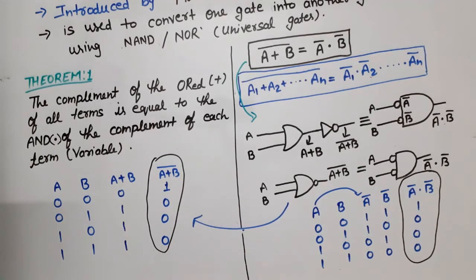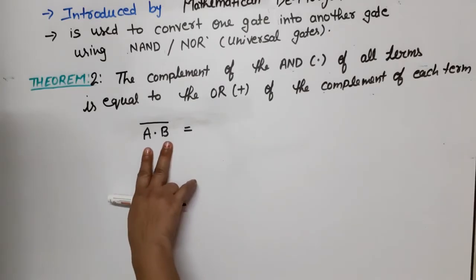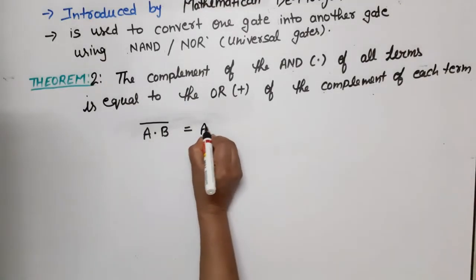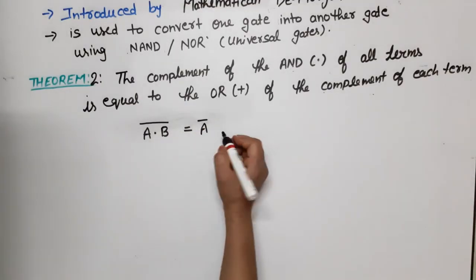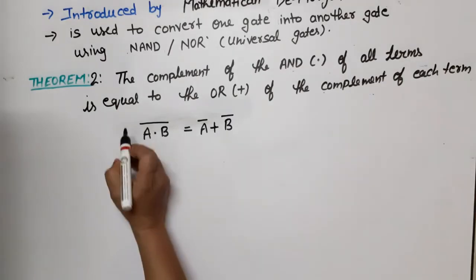Now Theorem 2: the complement of the AND of all terms is equal to the OR of the complement of each term. For two variables A and B, the complement of A dot B is equal to A bar plus B bar — the complement of each variable OR-ed together.